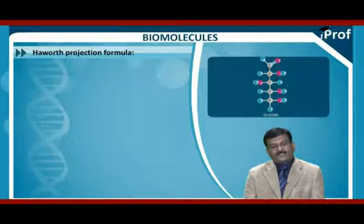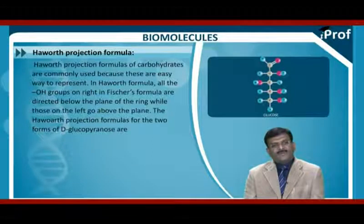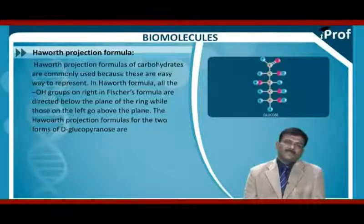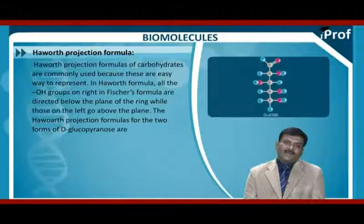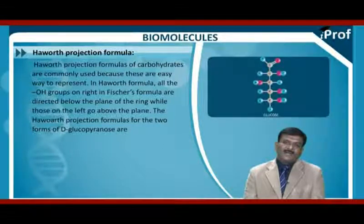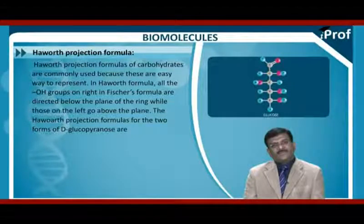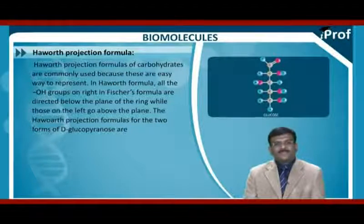The Haworth projection formulas of carbohydrates are commonly used because these are easy to represent. In Haworth's formula, all the OH groups on the right in Fischer's formula are directed below the plane of the ring, while those on the left go above the plane. The terminal CH2OH projects above the plane of the ring.